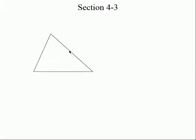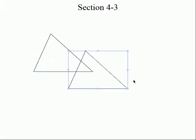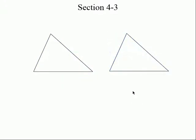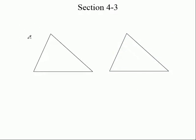All right, section 4.3. I've got one triangle right here. Watch what I do — I'm going to copy it and paste it. You see what I just did? It's the same exact triangle, isn't it? Would you agree? Let's change colors here. So they're exactly the same. I didn't twist them, I didn't flip them, I didn't do anything.